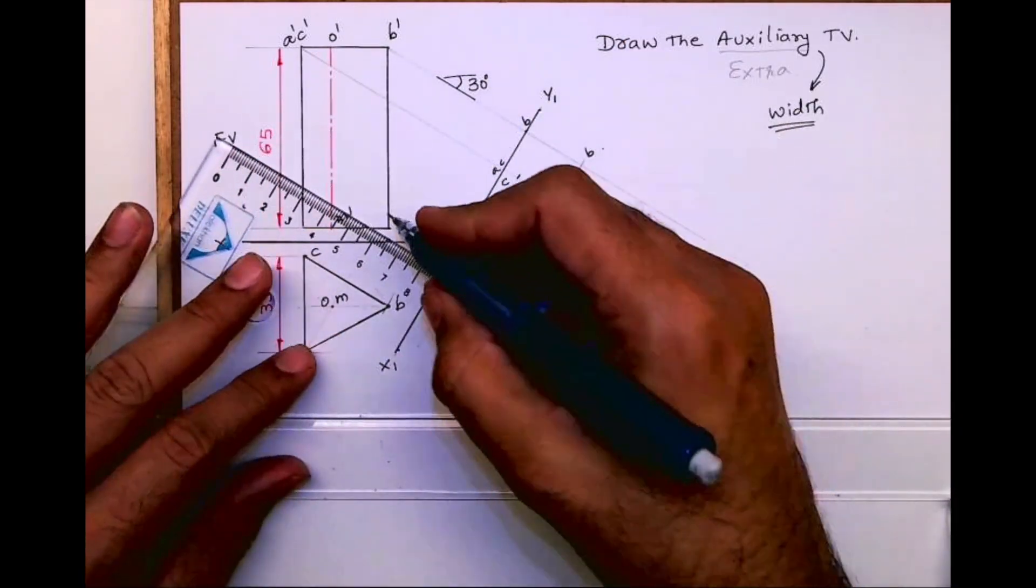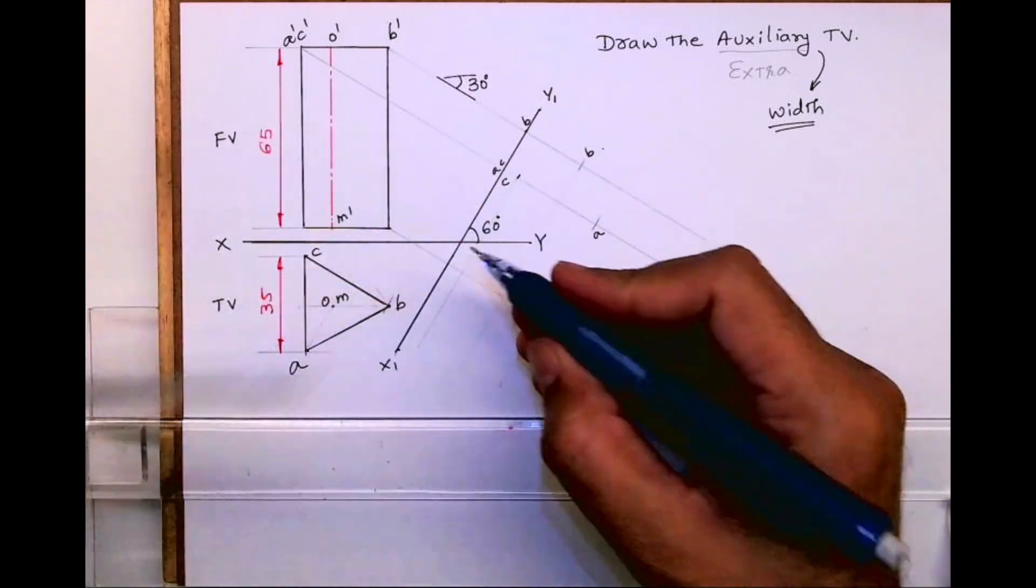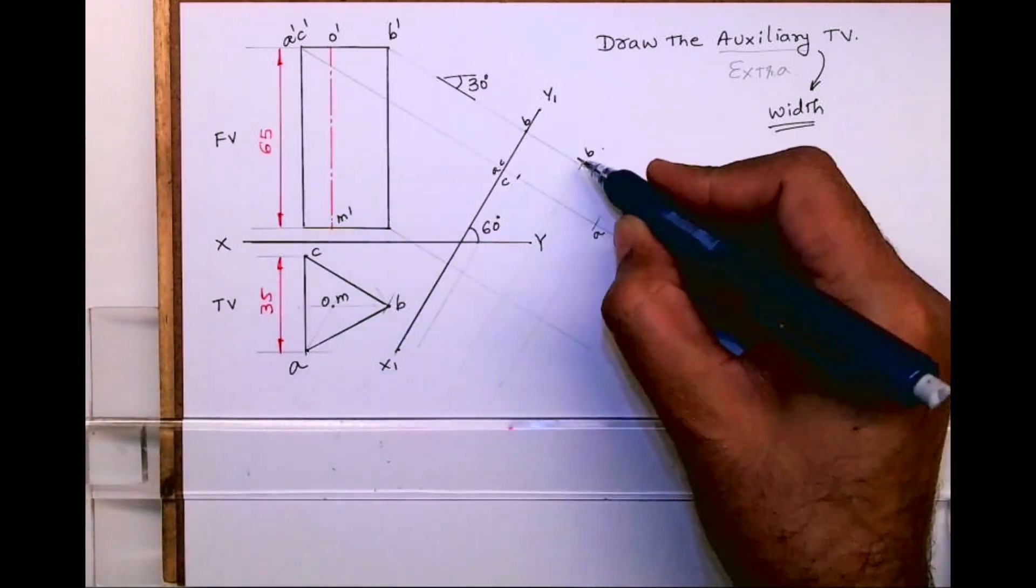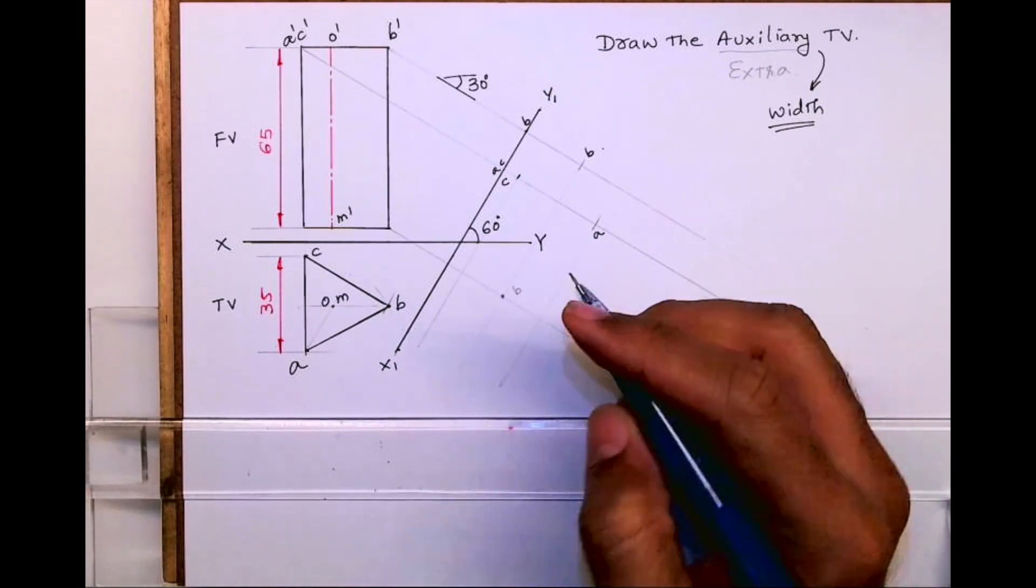Now what I will do? Now again I will take from front view. Now I have taken only one point, B, and from here B, I will get point B over here.